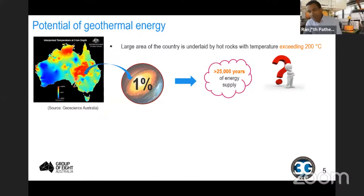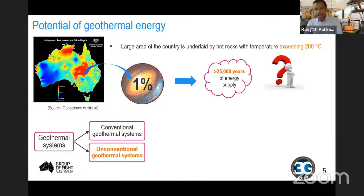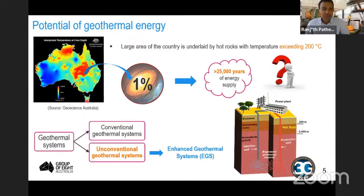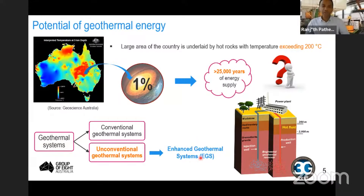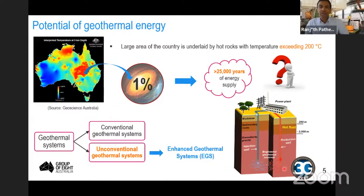As we know, geothermal systems have two types: conventional and unconventional. But in Australia, all of these are unconventional — particularly the AGS. In other words, we must precondition the rock mass; we must stimulate it before getting any heat to the surface. Quite a bit of stimulation technique needs to be carried out in order to get this heat, because this is a crystalline rock — a very tight rock. The permeability is extremely small.